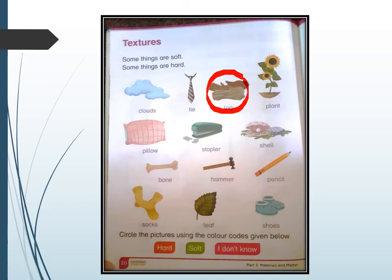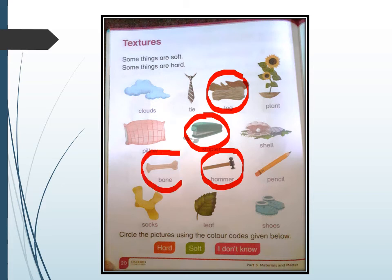Next, hammer. Yes, hammer is hard, so you have to circle the hammer. Next is bone. Bone is also hard, so here I have done the circle. And pencil is also hard, so I have made a circle on pencil.